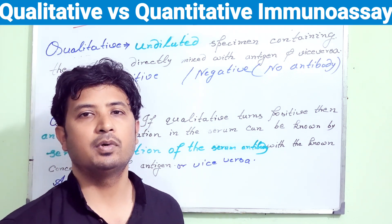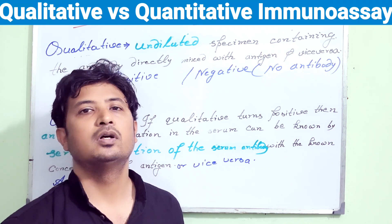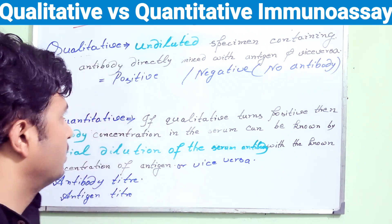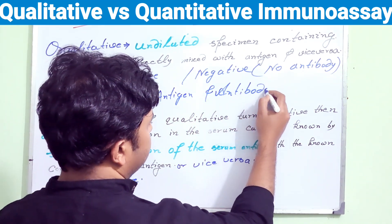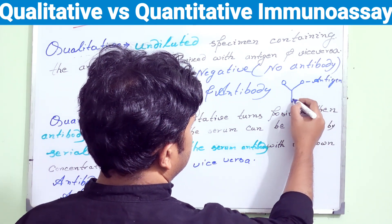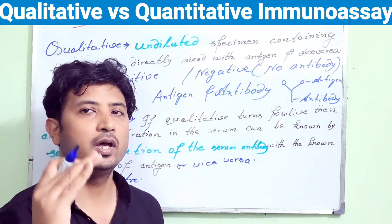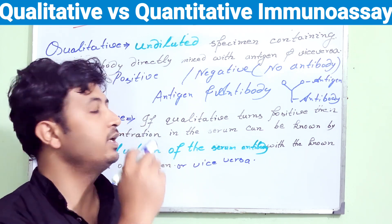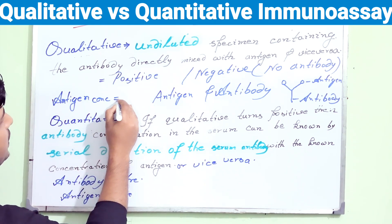Here comes the interesting lattice theory, which explains why the quantitative method is much more valuable and important. For an observable reaction between antigen and antibody to occur, all antibodies and antigens must be present in equal amounts. That is the key point: for a qualitative test to come positive, the antigen concentration must be equal to the antibody concentration.